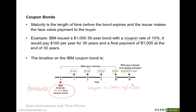IBM makes $100 coupon interest payments every year until maturity. Also keep in mind that at the end, the issuer IBM also needs to repay the principal. So the last payment includes two parts: the $100 coupon payment plus the principal. This is different from simple loans and discount bonds, which only make one payment at the end. Coupon bonds require payment each year plus repayment of the principal at the end.